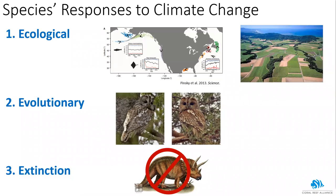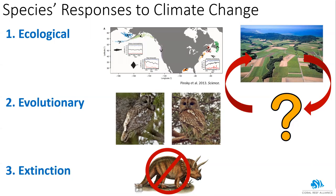From an ecological perspective, there's been work on facilitating ecological responses to climate change — for example, habitat corridors in terrestrial systems allow range shifts. But on the evolutionary side, people aren't really thinking about what we can do to facilitate natural evolutionary responses to climate change, and even less is known about interactions between ecological and evolutionary processes.